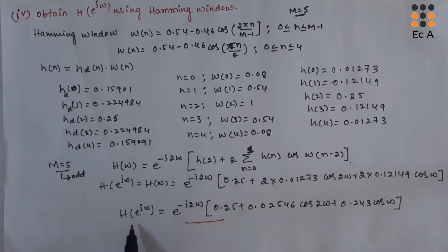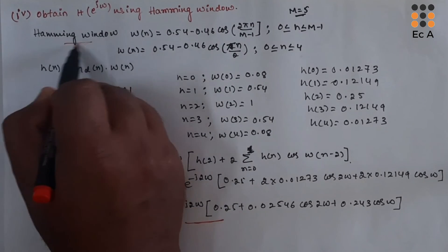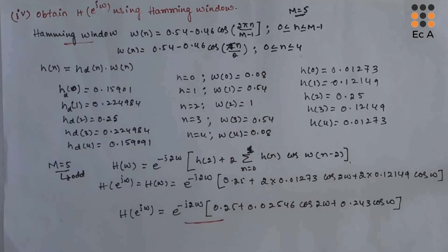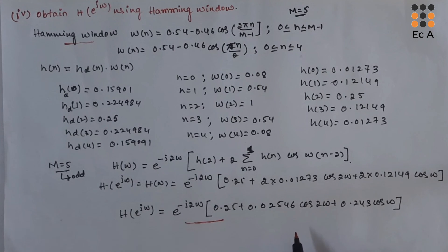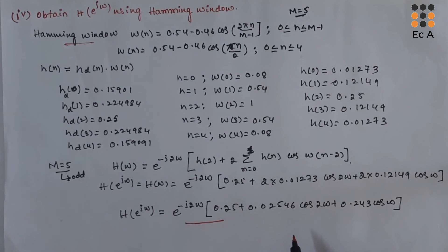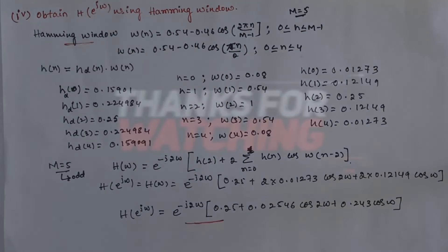We have found H of e^jω using the Hamming window. This completes the problem on FIR filter design using the Hamming window. Hope you have understood the topic. Thank you.